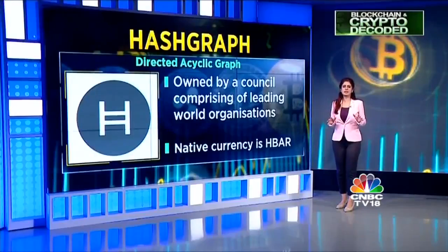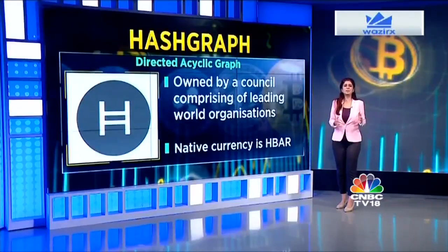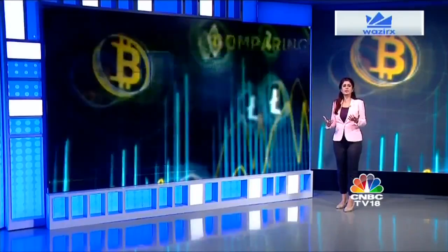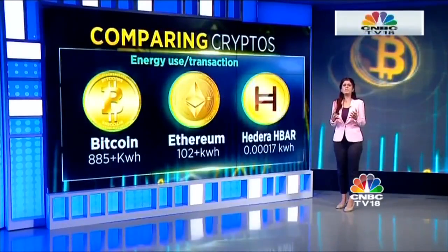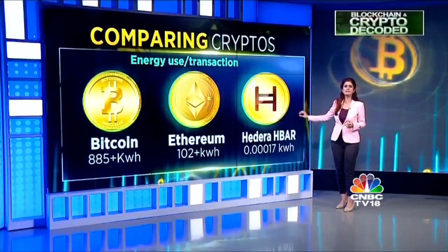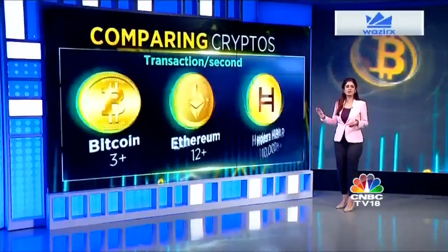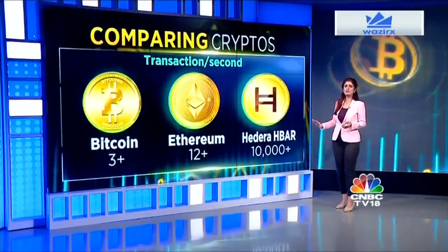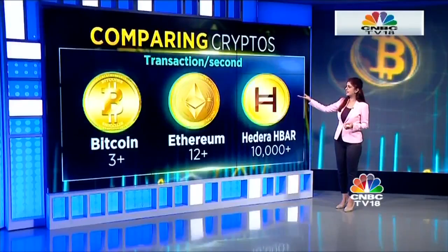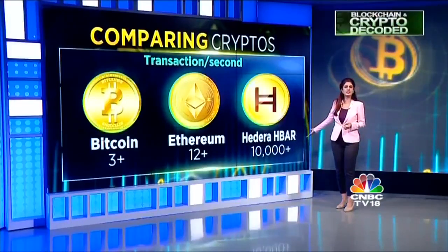Bitcoin pioneered decentralized infrastructure and Ethereum brought about programmability. However, earlier proof-of-work blockchains consume a massive amount of energy, while Hedera does that in a fraction — a topic for debate around the world. These older chains also process transactions slowly in order to achieve acceptable levels of security, which again Hedera HBAR has been able to surpass, with transactions per second far higher than where Bitcoin and Ethereum stand.